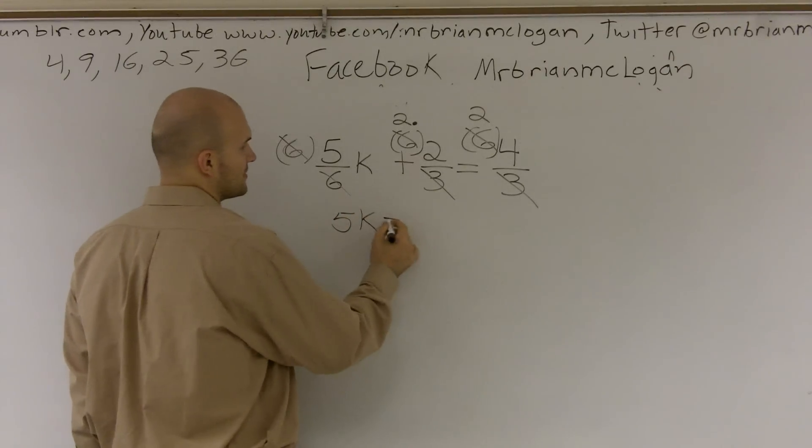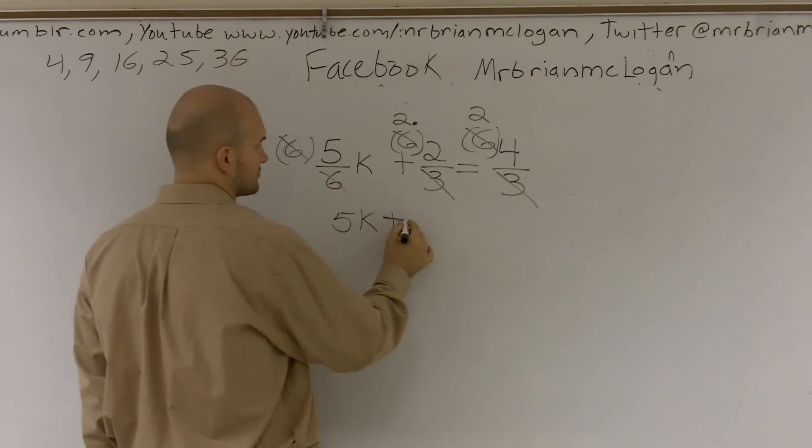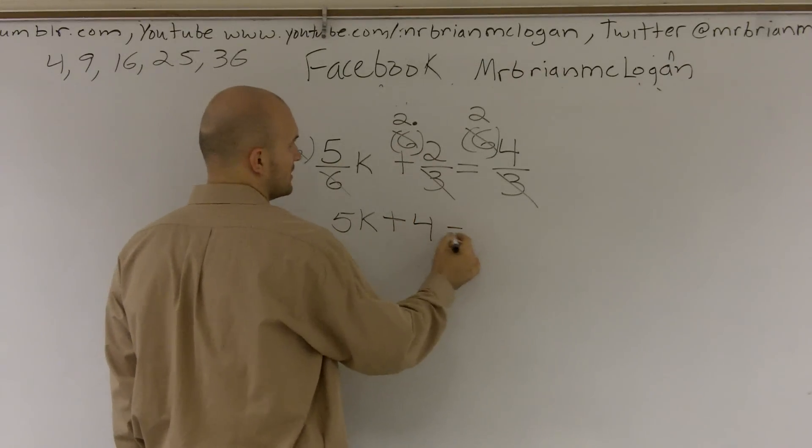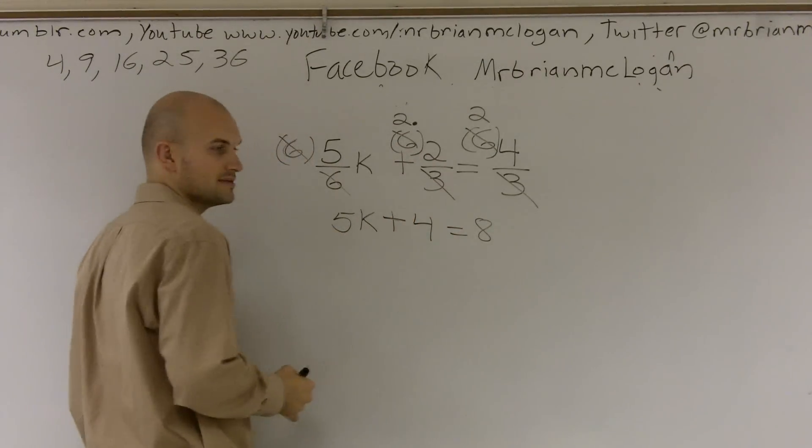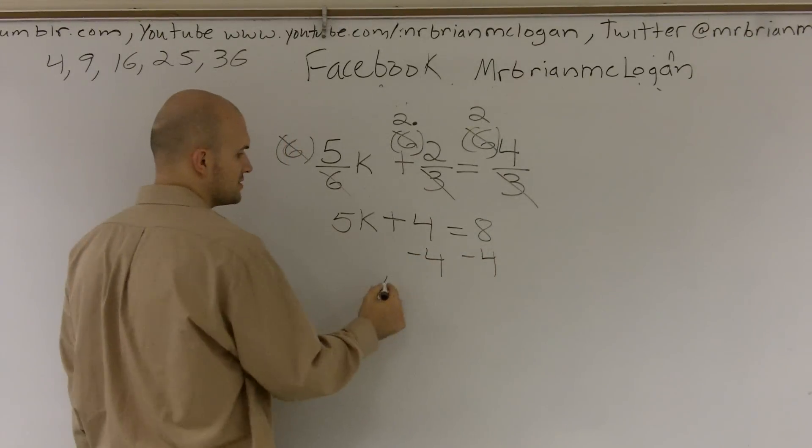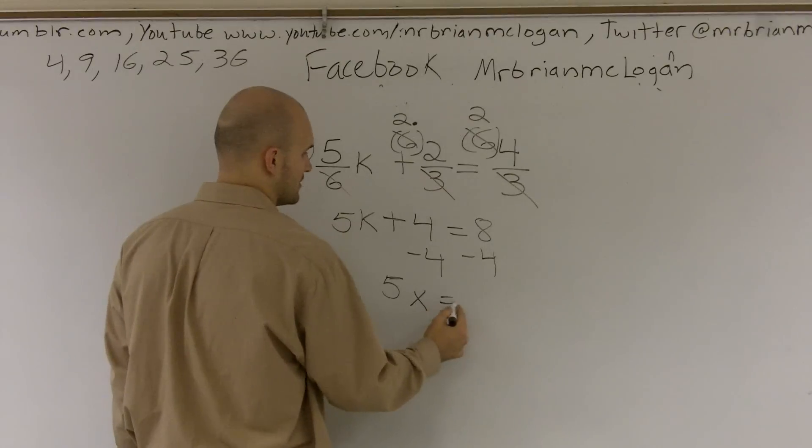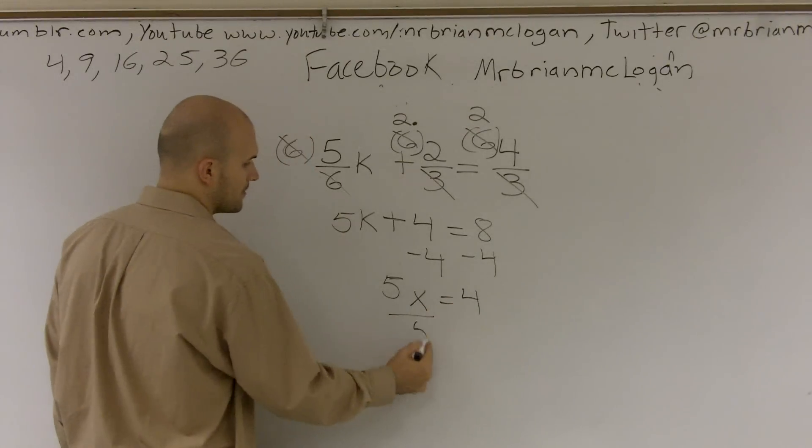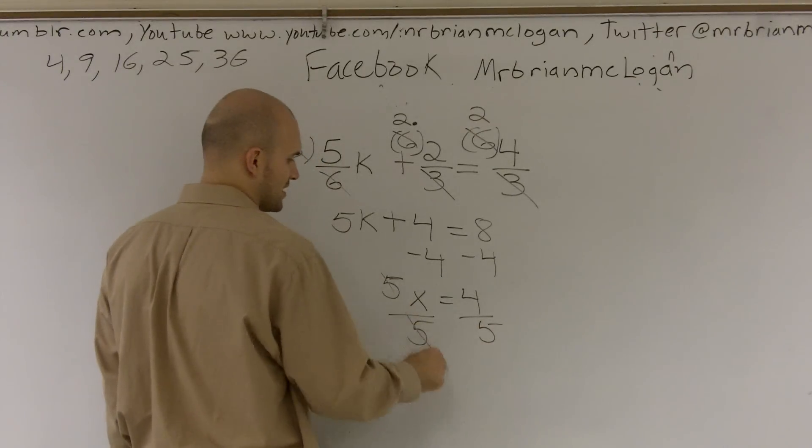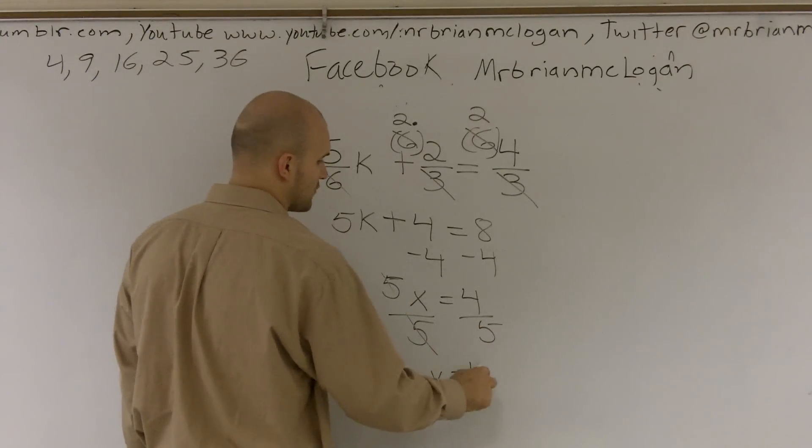So therefore you're left with 5k plus, let's see, 2 times 2 would be 4, equals 8. Then from here, you undo your addition and subtraction first, then before you get 5x is equal to 4, divide by 5, and you're left with x equals 4 fifths.